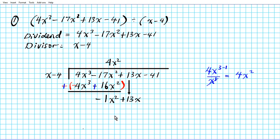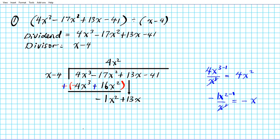We repeat the same procedure. Looking at the leading terms x and negative 1x², we ask: how many times does x go into negative 1x²? Dividing negative 1x² by x — minus over plus is minus — and subtracting the exponents gives us negative x. Since it's degree one, we align it in the degree-one column of the quotient.